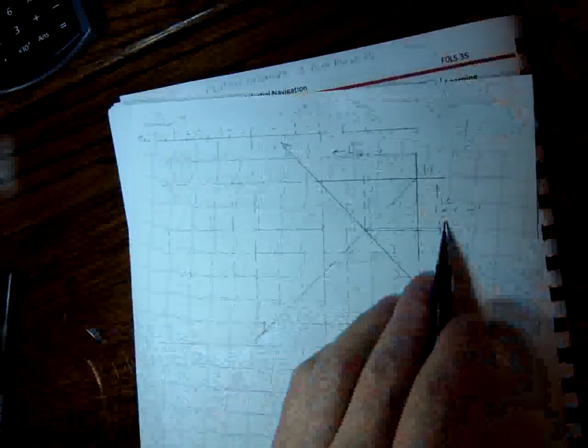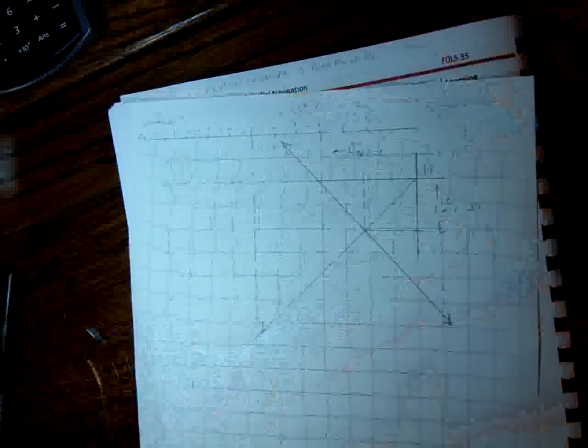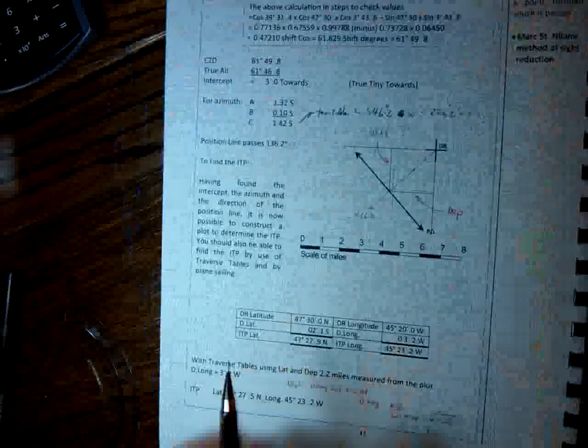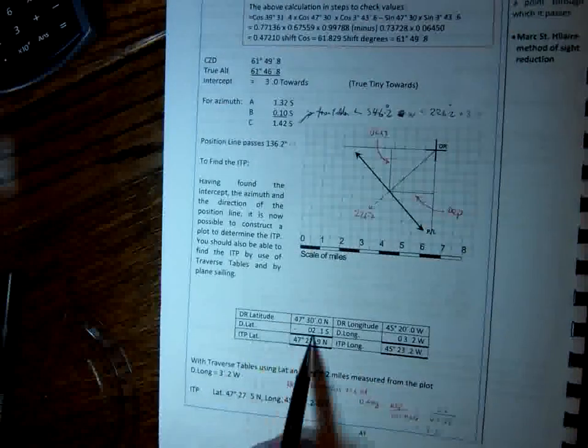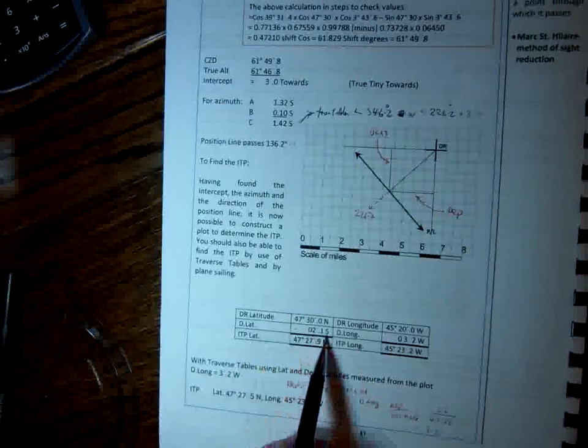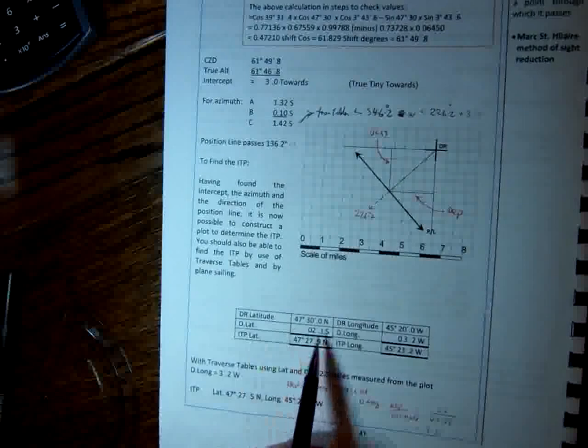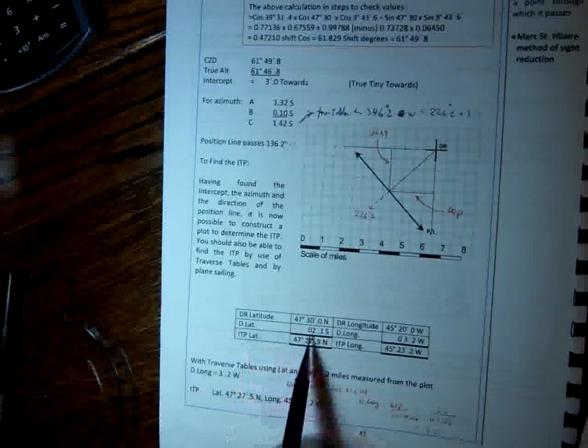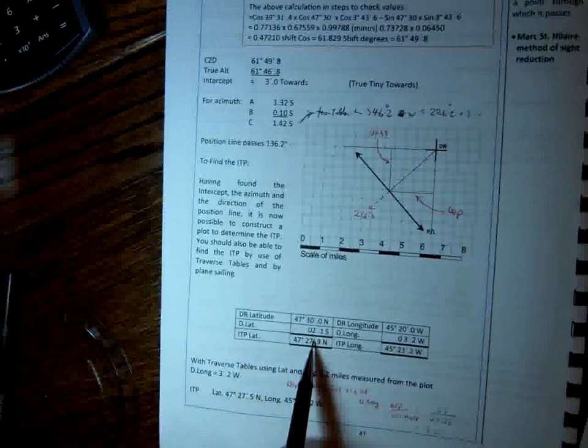So we're OK to use our d lat from our DR position to find our latitude. What we do then, as you can see on the book there, we've written in our d lat of 2.1. It's in a southerly direction, so your ITP latitude, your position line plotted latitude, is going to be less, because it's southerly. 47, 27.9.